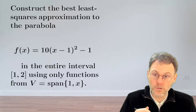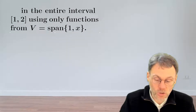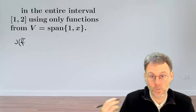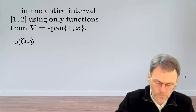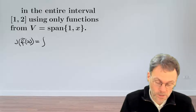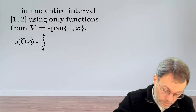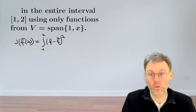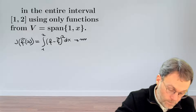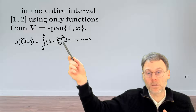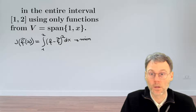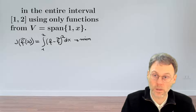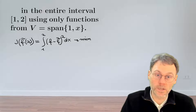Obviously, we need to minimize the difference between the approximation and the function itself. So we need to construct some sort of functional, some sort of energy difference. That functional will depend on our approximation f-tilde of x, and we're going to say that this is the energy, the difference in the interval from 1 to 2, of the difference between our function f and our approximation f-tilde, and since we're working in the least-squares sense, we're going to square that difference. You might wonder why we take a square — an absolute value would also work — but the square gives easy formulas to work with, so this is the conventional choice.